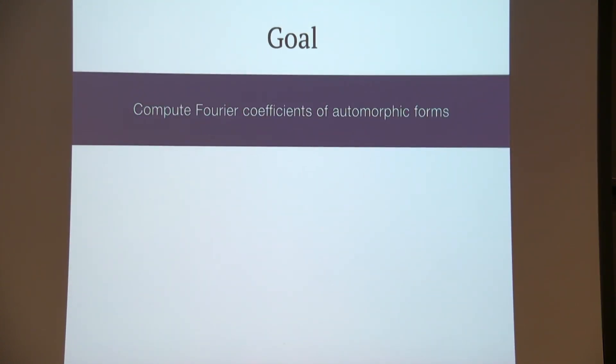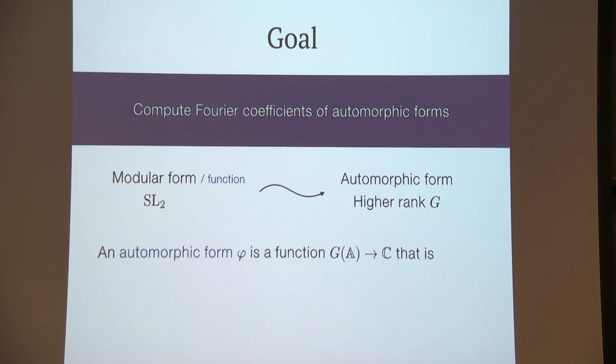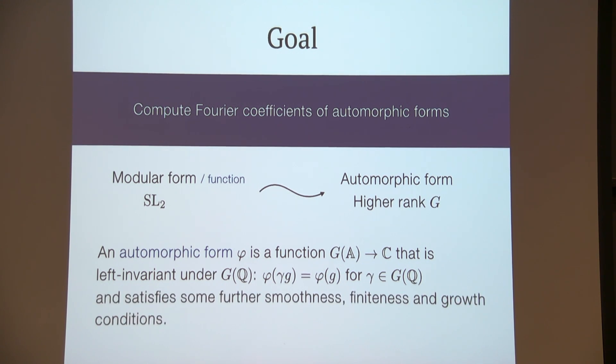So we are now seeing how we can do Fourier expansions on groups, what the difficulties are, and we've seen some different kinds, given some special kinds of Fourier coefficients and their names. So let's get back to the goal of this project, which is to compute Fourier coefficients of automorphic forms. An automorphic form is kind of like a generalization of modular forms or functions but for higher rank groups. More specifically, an automorphic form is a function on G(A) which is left invariant under the discrete subgroup G(Q). It also has some smoothness, finiteness, and growth conditions, but they won't be important here today.